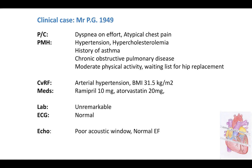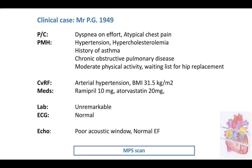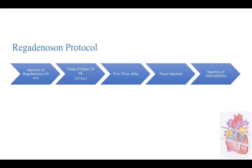Due to the fact that he is a little bit obese, he has a poor acoustic window, but apparently he has a normal ejection fraction at echocardiography. So we decided to submit him to myocardial perfusion scintigraphy. Due to the fact that he is on the waiting list for hip replacement and has asthma, we decided to use regadenosone protocol as described in a previous video.